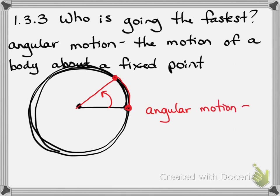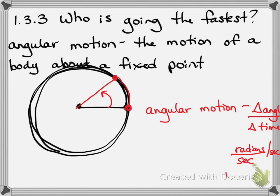Let's use delta for change. So the change in the angle over the change in time. For example, the change in angle could look like radians per second, where radians is the change in the angle and per second is the change in time. We could also be talking about revolutions – how many times does it revolve or go around per minute.